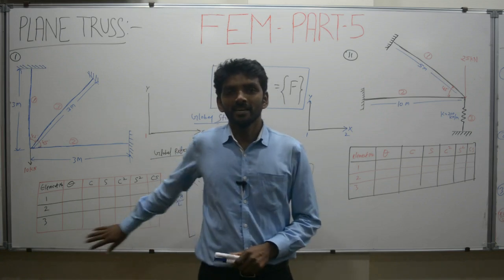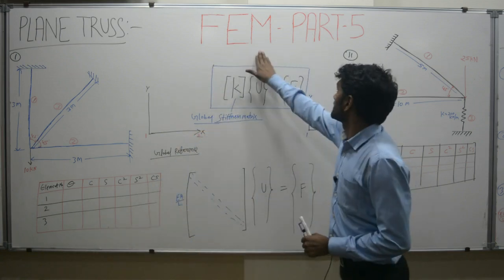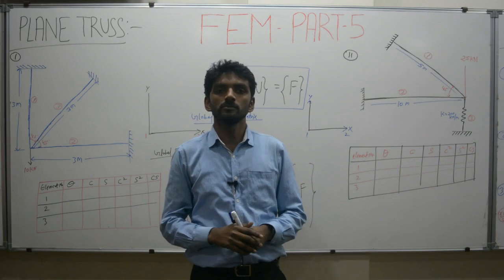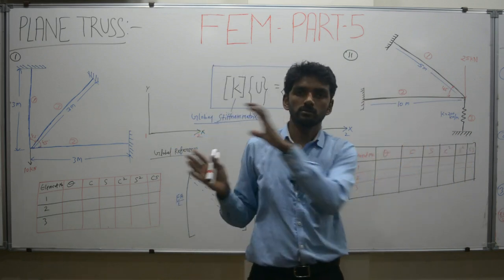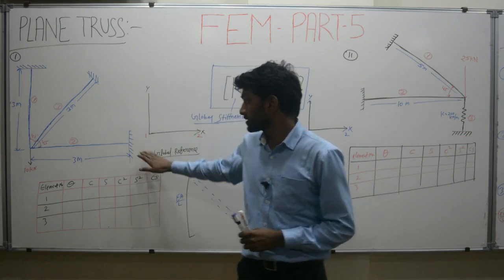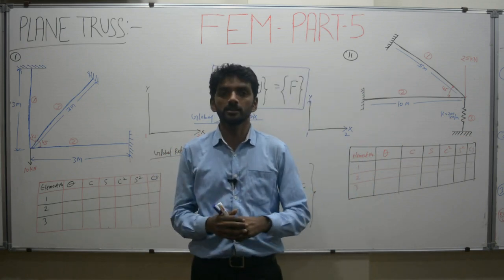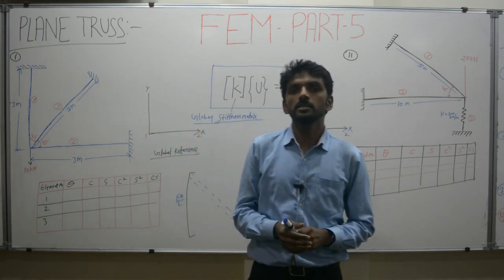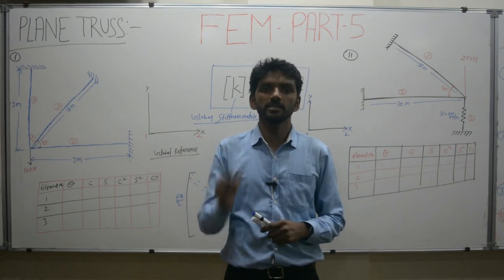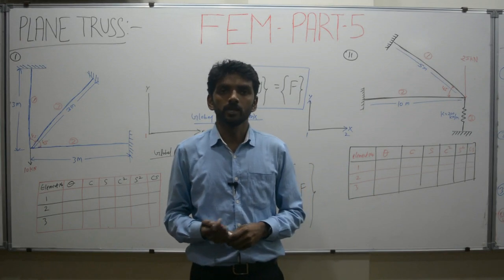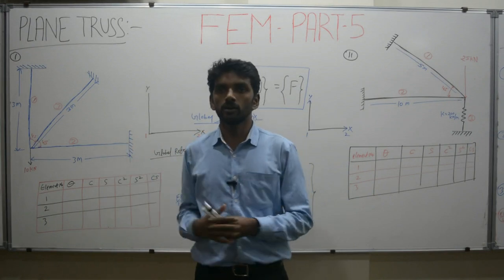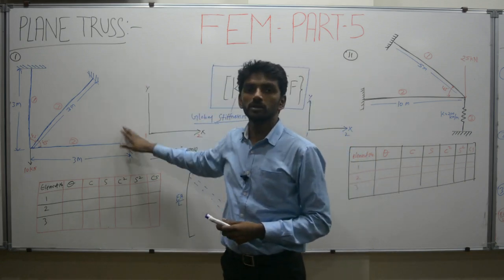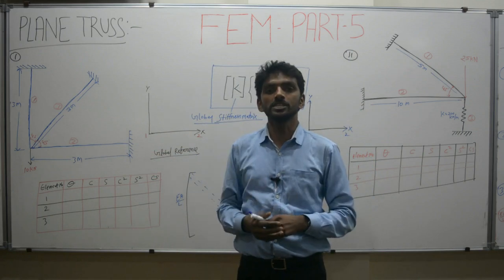Hello everyone, here we are again for finite element method part 5. As per our initial plan, we had planned to cover parts 1 through 4. But at part 4, I realized that students are taking much interest in programming these kinds of problems. They are reporting issues while solving the plane truss problem, especially with numbering of particular elements. So today, as an extension of part 4, I am going to cover the plane stress problem — specifically how to number or find out the orientation of each and every element.